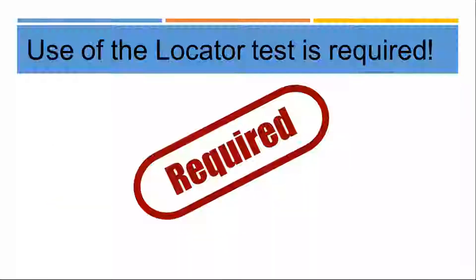Moving on to the locator test — at the WIOA Summit, many Title I programs were not using the locator, but on the TABE 11 and 12, the use of the locator is required. There are three separate locators: one for reading, one for math, and one for language. If you're only giving the math test, you give the math locator. With computer-based TABE Online, the system automatically administers the locator prior to any pre-test.